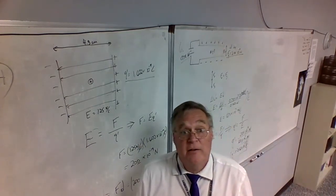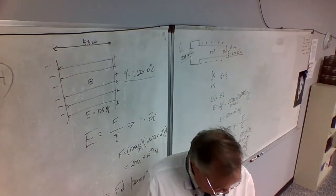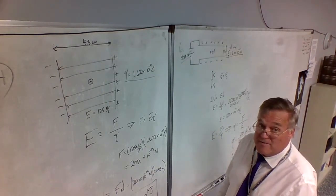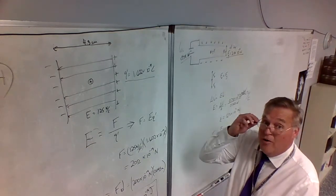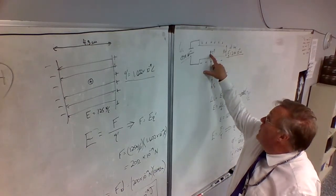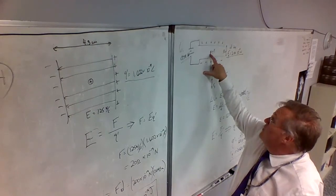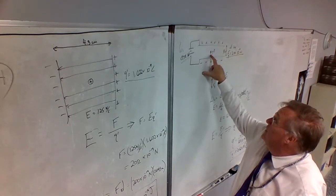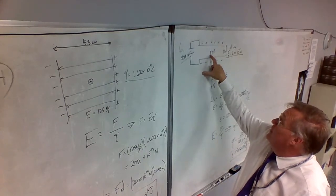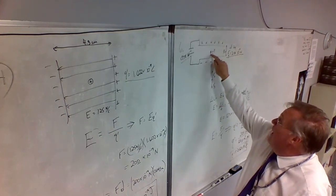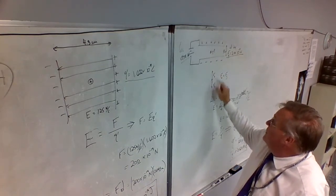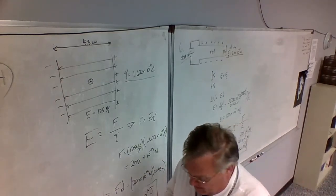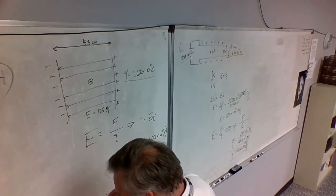I'm glad the answer choices included the negative sign, since I initially thought the drop would need to be positive to float — I was wrong. A positive charge in that configuration would sink immediately because gravity and the electric force would both act downward. The charge must be negative for the electric force to oppose gravity and allow the drop to float.